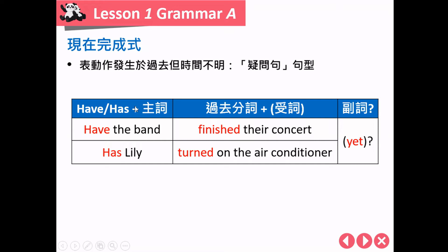那我们接下来看一下疑问句的句型。have 跟 has 是助动词，所以在疑问句的时候非常简单，我只需要把 have 跟 has 移到句子的最前面就可以了。疑问句中常常会加上 yet 在句子的最尾巴。Let's read the sentence together. Have the band finished their concert yet? Has Lily turned on the air conditioner yet?